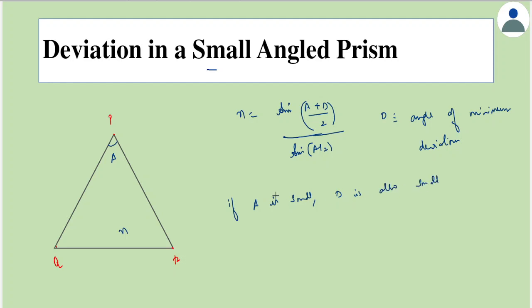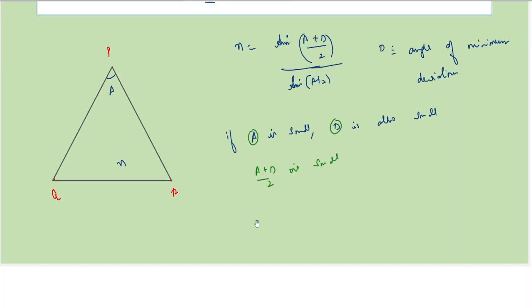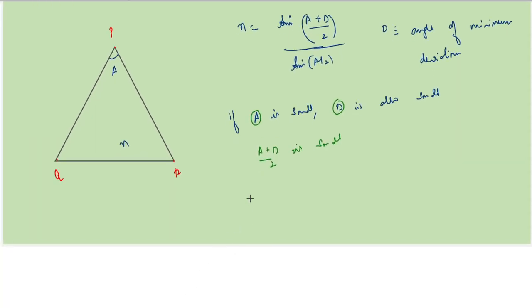Since A and D are small, if we add them and divide by 2, in that case then even (A plus D) also would be small. Therefore, we know that for small angles, sine theta is almost the same as theta only.